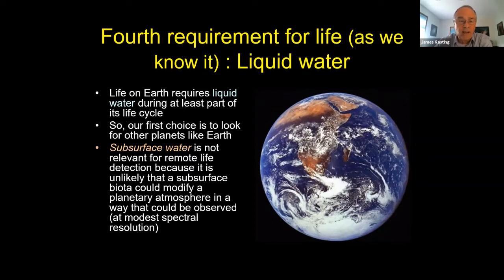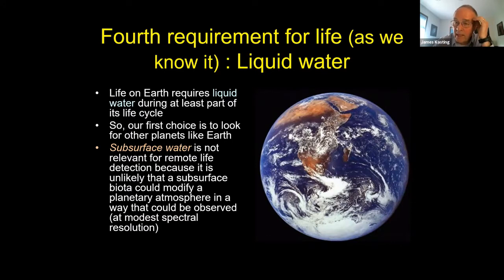The Huygens probe got us down to the surface, and Dragonfly is going to fly around on the surface. My friend Jonathan Lunine at Cornell would like to sail a boat on Titan and sample the methane lakes. So for life like that in our own solar system, we can test it. But for exoplanets, where we just have remote observations, it's probably safest to assume we need surface liquid water. You may have subsurface liquid water on planets like Mars or moons like Europa, but that's really difficult to detect remotely.